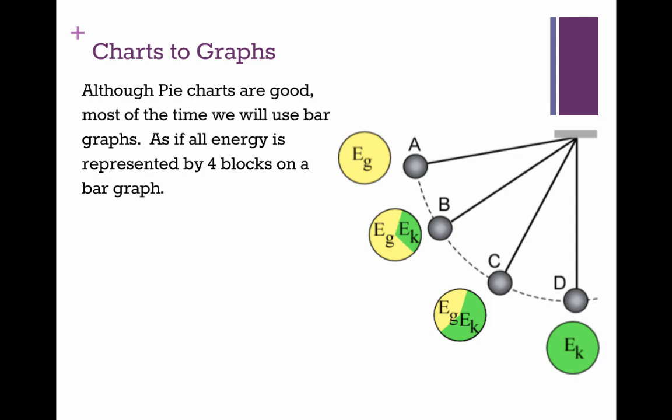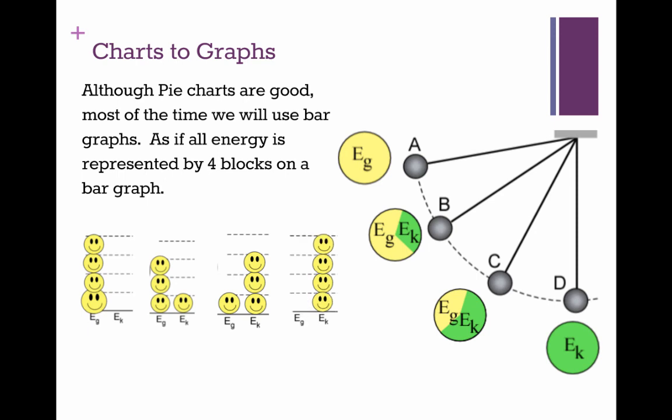Although pie charts are really good, most of the time we'll end up using a bar graph, as if all the energy could be represented by four blocks on a graph. So position A would be all Eg, position B we might say is 3 Eg and 1 Ek, position C would be 1 Eg and 3 Ek, and position D would be all Ek.